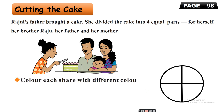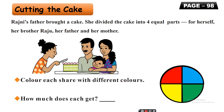Color each share with different colors. We have colored each portion in different colors. How much does each person get of the whole cake? Each person gets one part out of four parts. If we write this as a fraction, the parts we want to show go on top — that means numerator — and the total parts go on the bottom — that means denominator. That means one upon four. So each person gets one-fourth part.